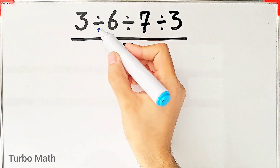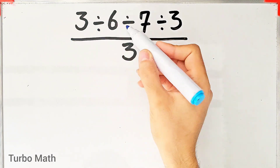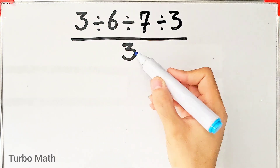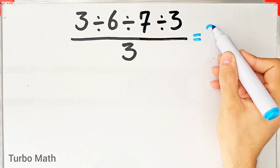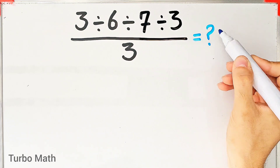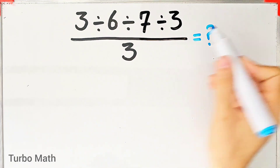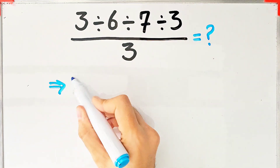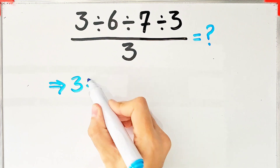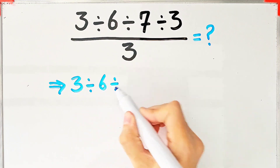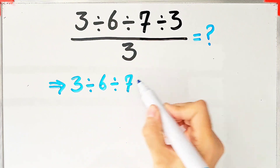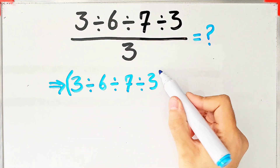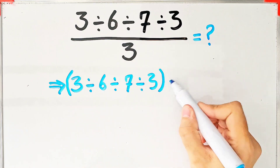3 divided by 6 divided by 7 divided by 3, then over 3. What is the answer of this question? Can you solve it? First, we simplify the question. We have 3 divided by 6 divided by 7, then divided by 3 in the numerator, and then divided by 3.